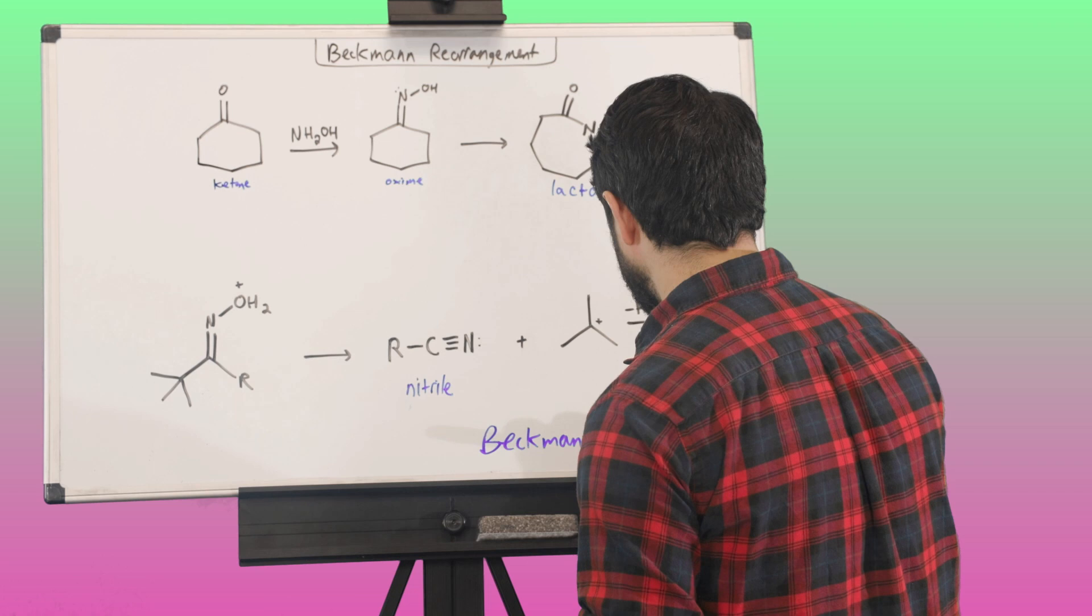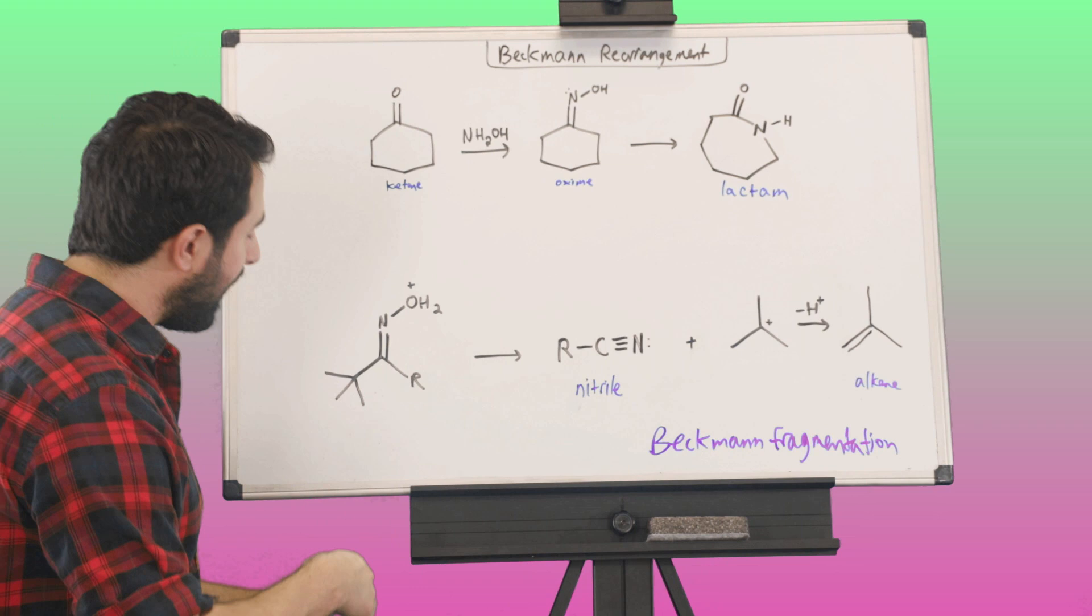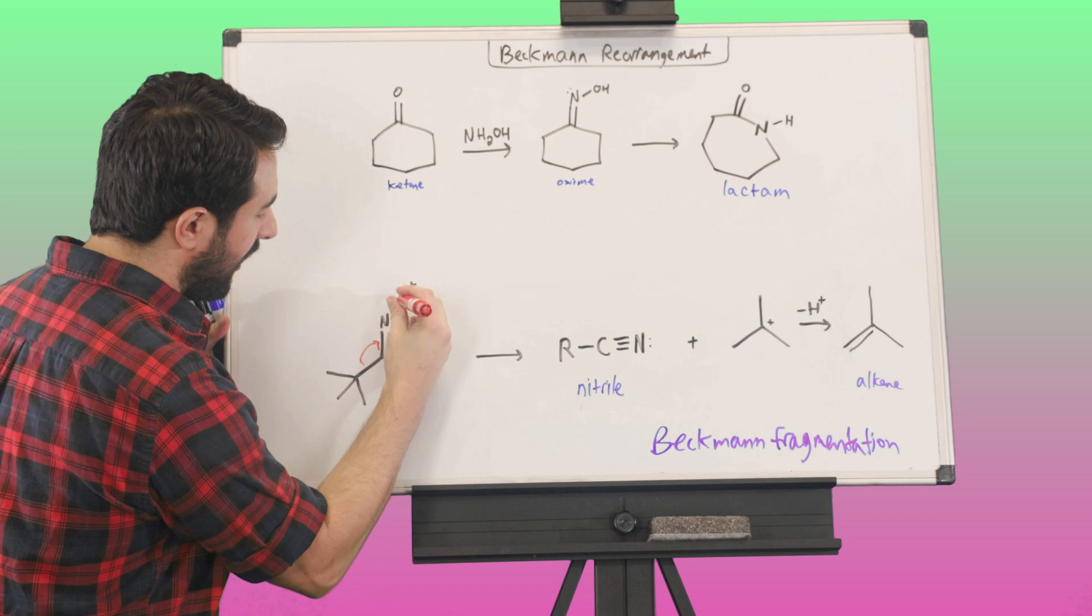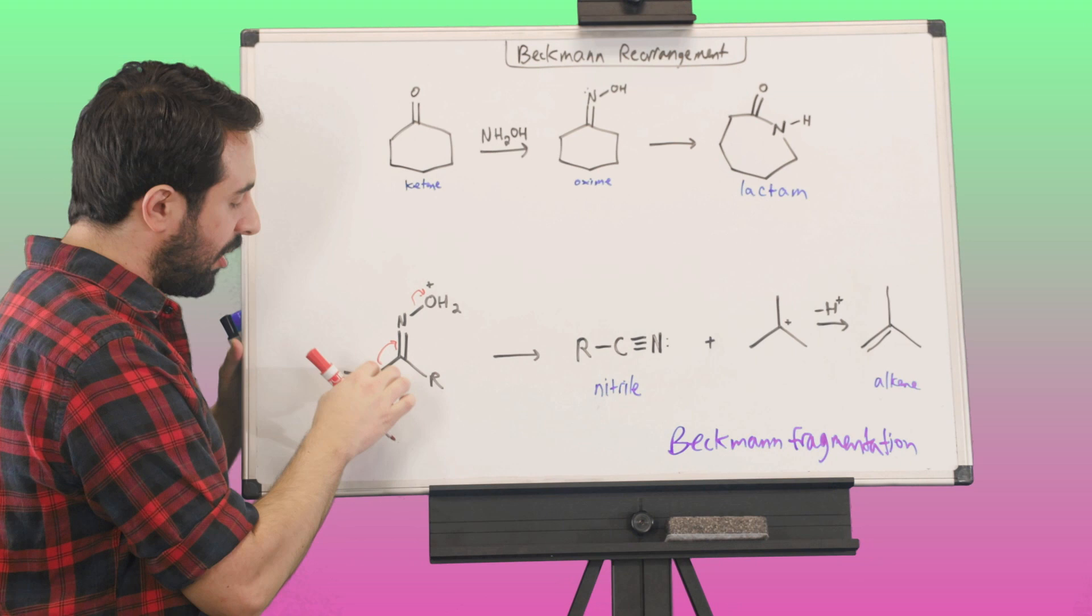And so, what happens is, we've got this group here, right? So, this is a tertiary carbon. And so, what we expect, we know that this carbon, sorry, this bond is going to go here, and we're going to kick off water. But what we expect is for the nitrogen to then go and finish off the rearrangement and coordinate to this carbon. But, because this is a tertiary carbon, and tertiary carbocation is quite stable...